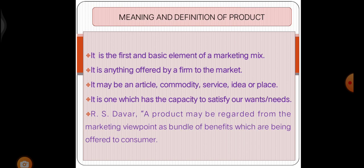Now, let us see the meaning and definition of product. There are four important P's, namely product, price, place, and promotion. In that, product is the first and basic element of a marketing mix. That is, it is anything offered by a firm to the market. It may be an article, commodity, service, idea or place, and it is one which has the capacity to satisfy consumer needs and wants.